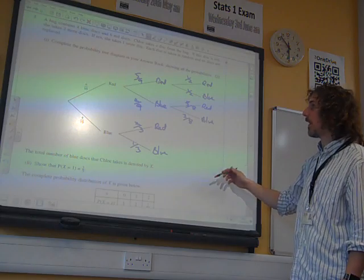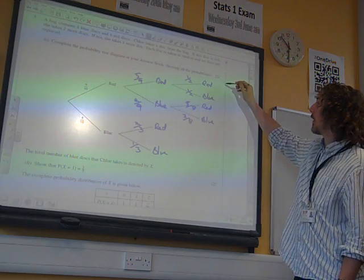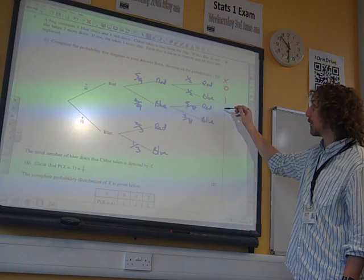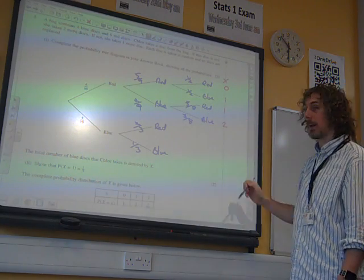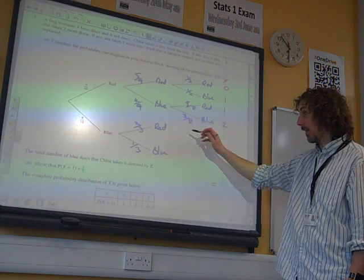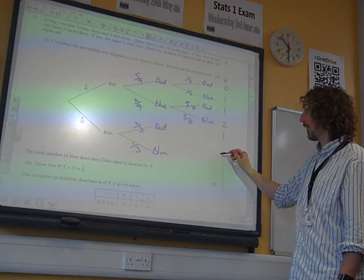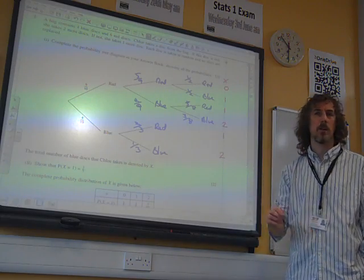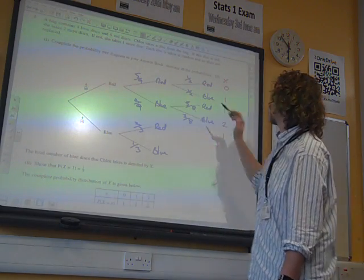So x is the number of blue discs. So this was x being zero. Here x was one. x was one there. x was two in that case. This branch here x was one, and here x was two. Does that make sense? Can you see what we've done with that? Just to kind of work out what was going on with x.